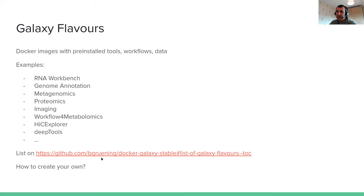You have the possibility to create Galaxy flavors — specialized Docker images for specific scientific fields. For example, you can build your own image. There is a catalog of existing images to perform genome annotation, RNA analysis, or metagenomics. Each one has a specific Docker image with pre-installed tools, workflows, and data. There's a list available, and we'll see how you can easily create your own flavor with your tools and data.